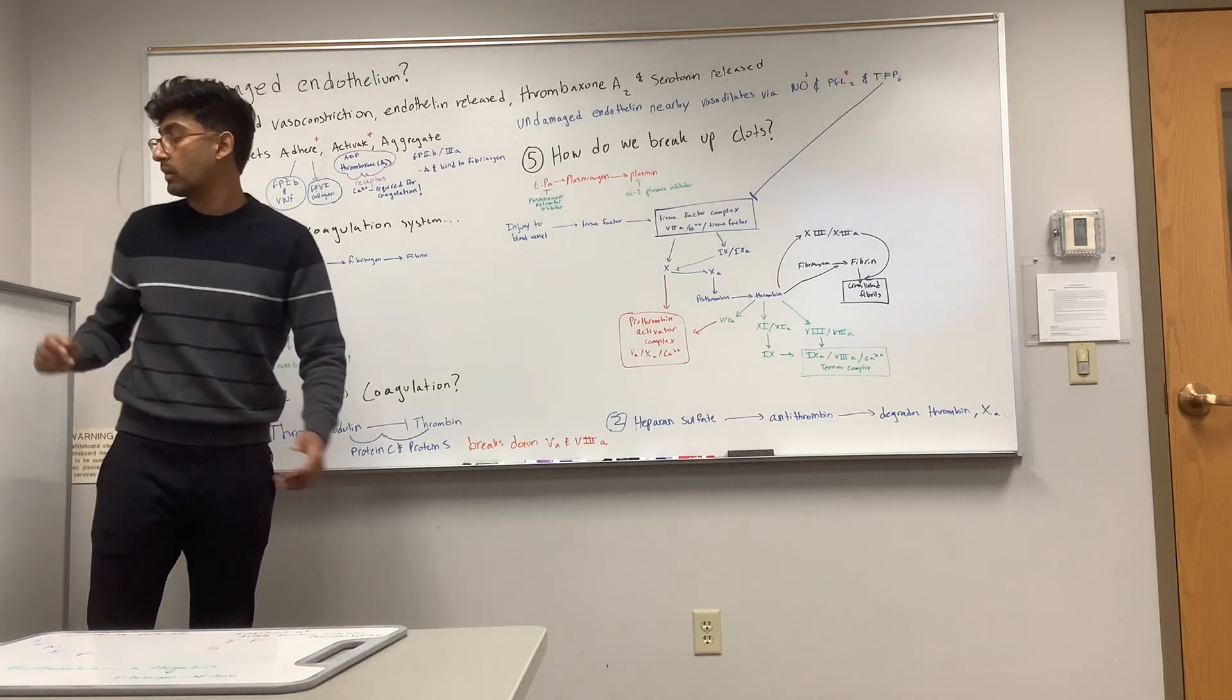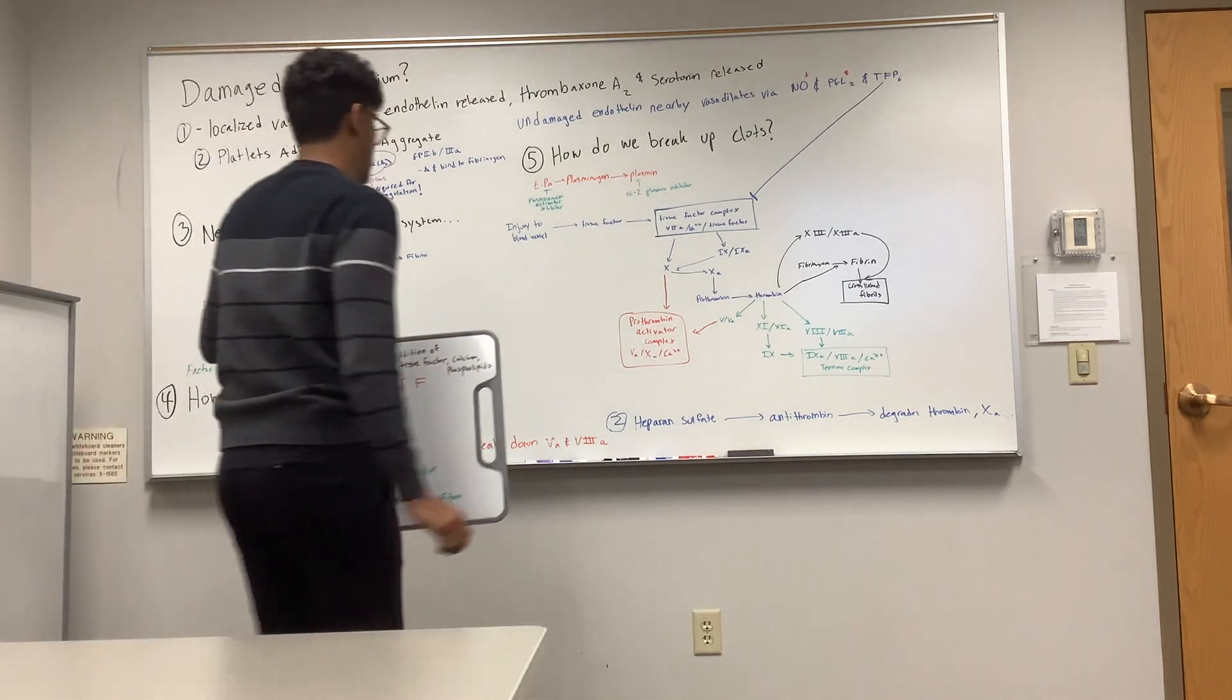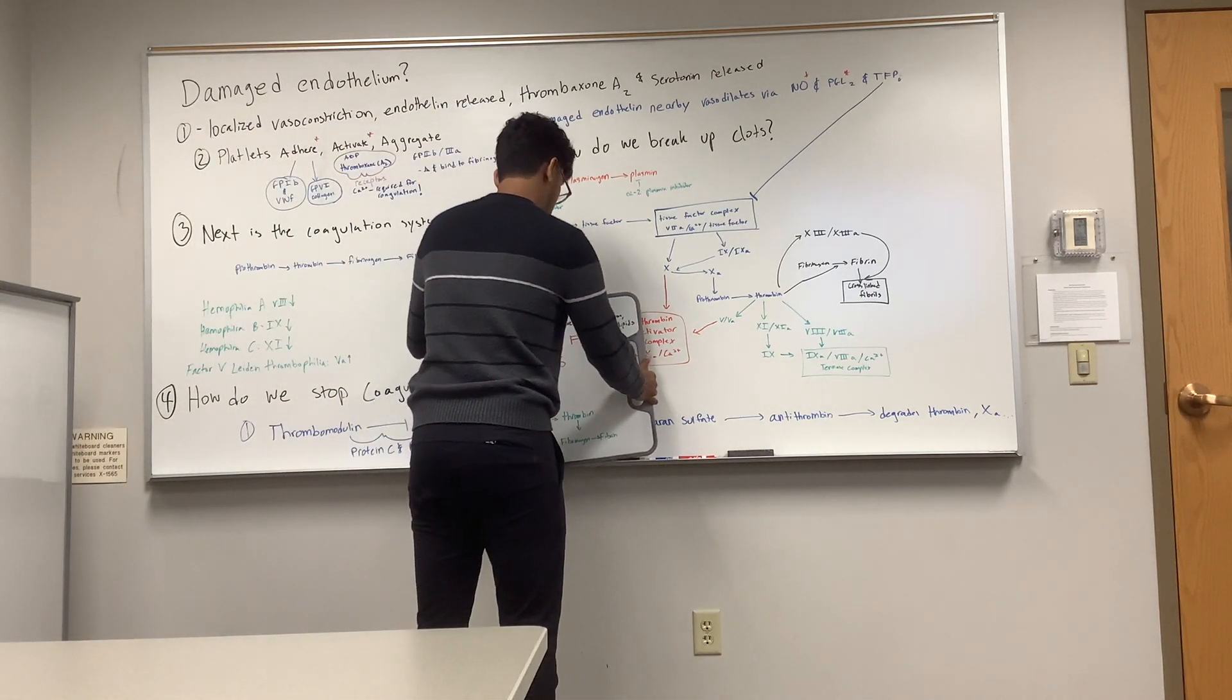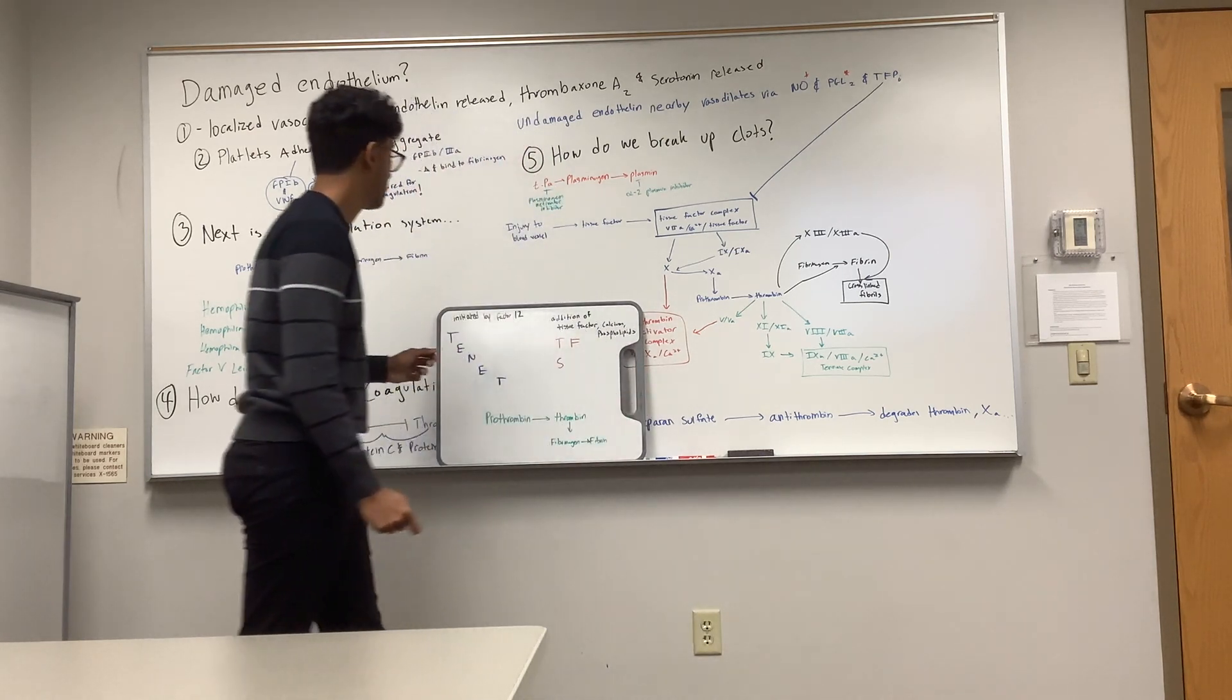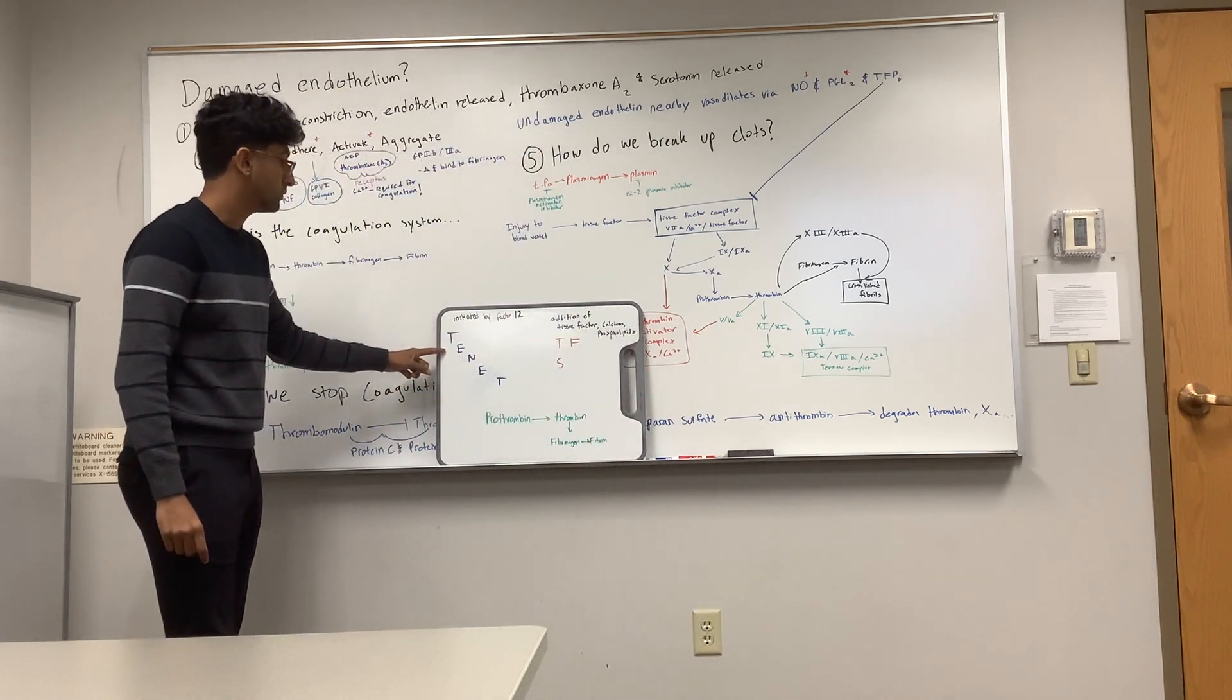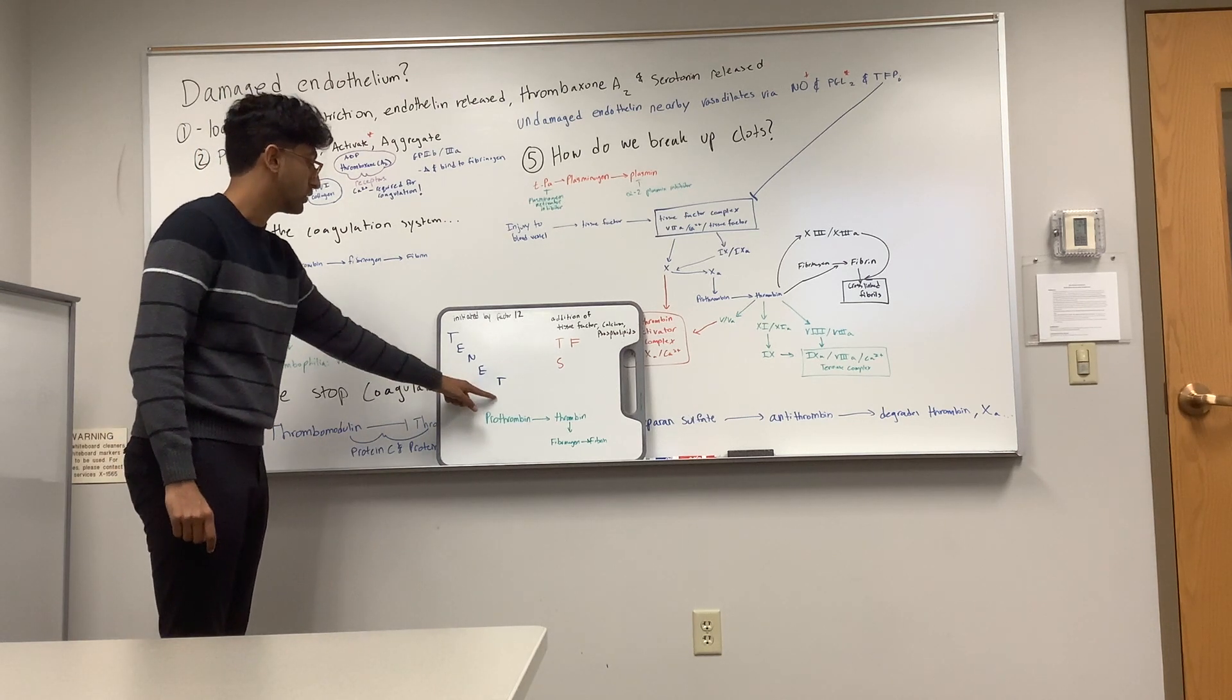One way you can remember this is through the extrinsic and intrinsic system, which is used in laboratory science. I get this mnemonic from one of my pathology teachers. For the intrinsic system, you can remember it through: 12, 11, 9, 8, 10. Those are the factors.